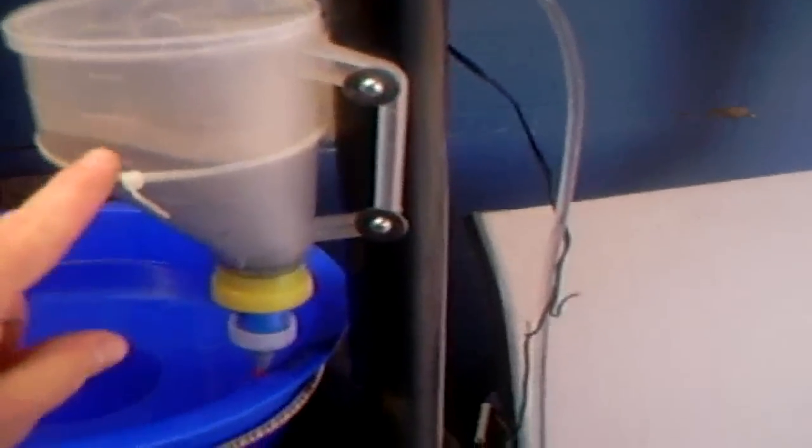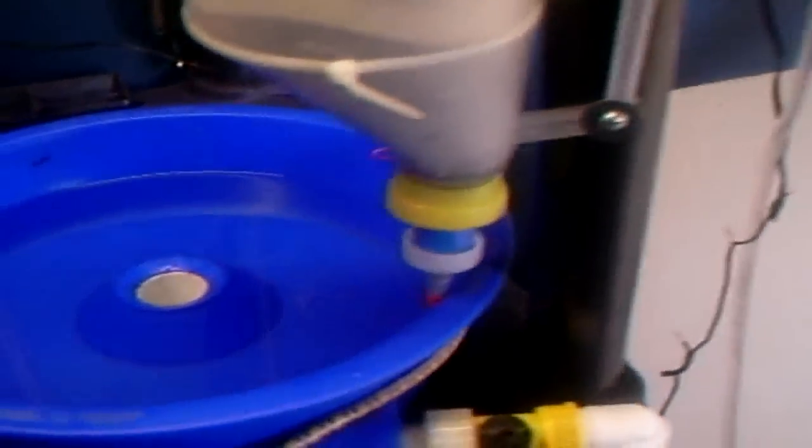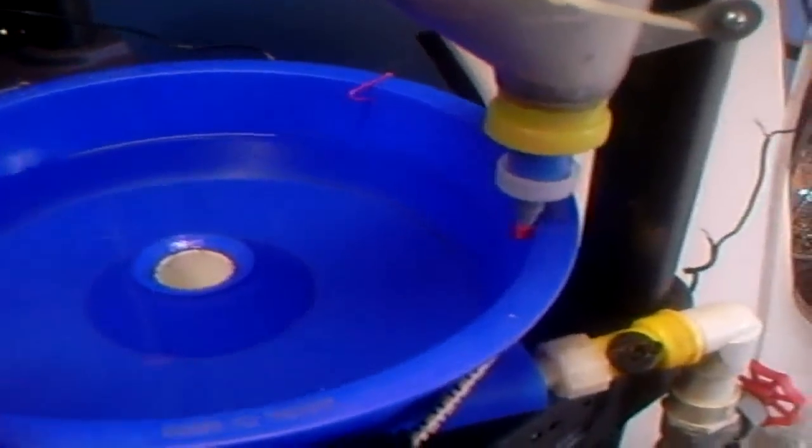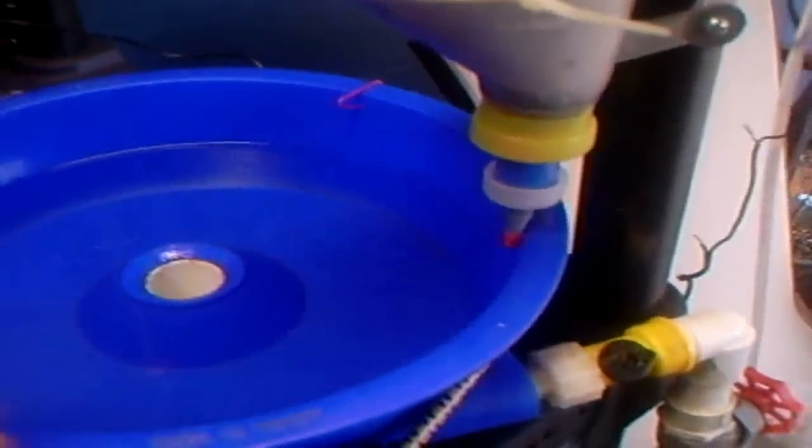And the one on the hopper keeps the material flowing real well down into the blue bowl. And the one that I've got on the blue bowl actually helps to settle the gold down. It keeps everything vibrating, the lighter stuff goes out and the gold gets settled down.